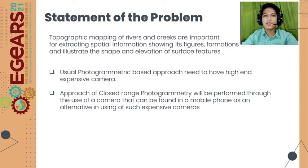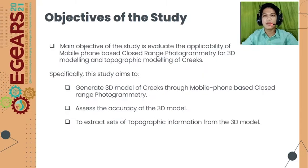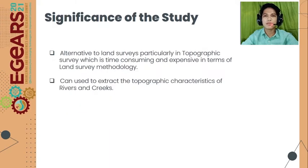This is where the study comes in — it aims to evaluate the applicability of mobile phone-based close-range photogrammetry for 3D modeling and topographic mapping of creeks. Specifically, it aims to generate the 3D model of creeks through mobile phone-based close-range photogrammetry, assess the accuracy of the 3D model, and extract sets of topographic information from the 3D model.